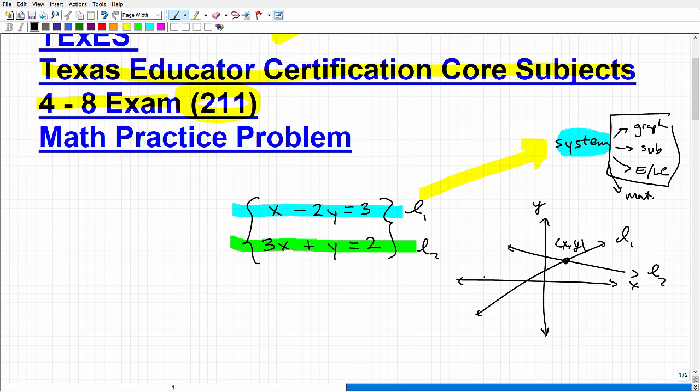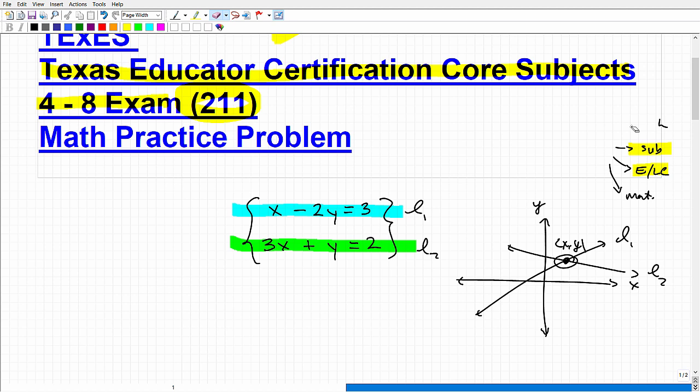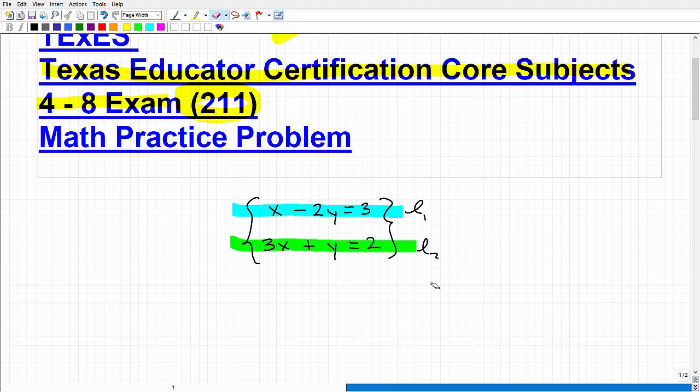One way when you're first studying systems is, hey, you can graph these lines and then look to see where do these lines intersect and then point out that specific x, y coordinate. But that's a very impractical method. Really, the things that you have to be thinking about is the substitution and or elimination linear combination method. These are kind of like our main tools, if you will, to solve systems like this. So, there is your hint.